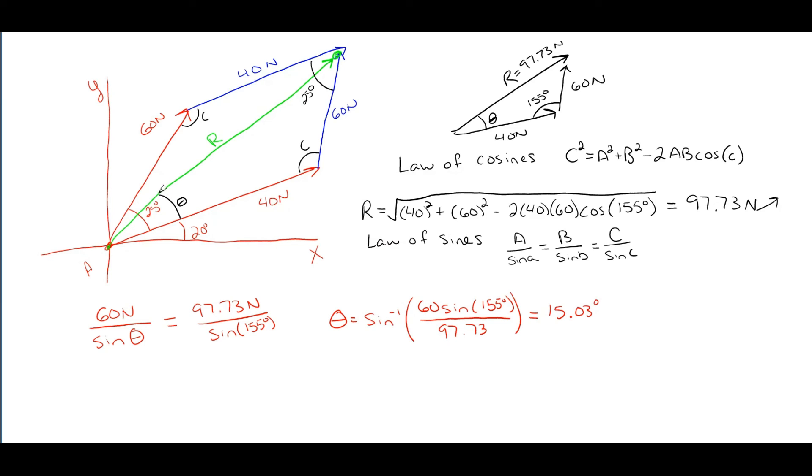And this angle comes out to be 15.03 degrees in total. And of course, that will be this angle right here. And the total angle off the x will just be adding in that 15.03 degrees plus the 20 right here, which we will truly locate the resultant. So that's going to be 15.03 plus the 20 degrees. And that gives us 35.03 degrees. And that would be our total off of the x-axis.